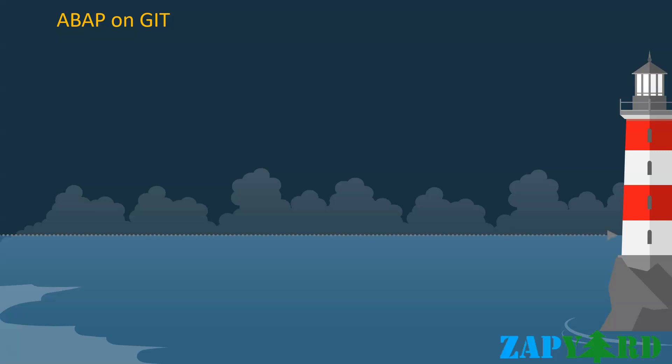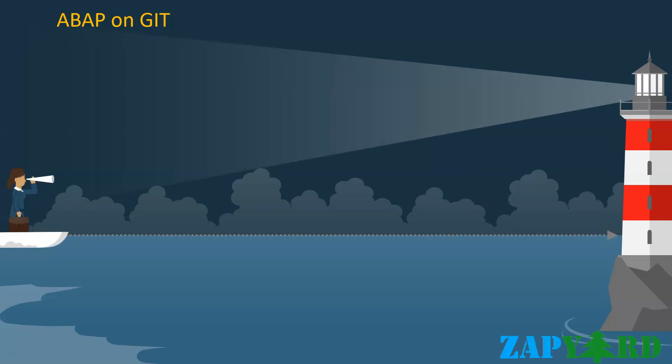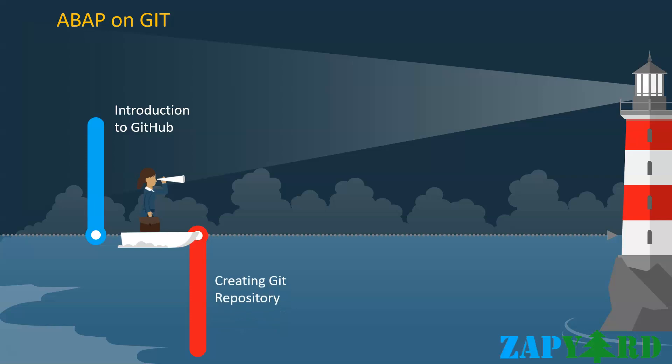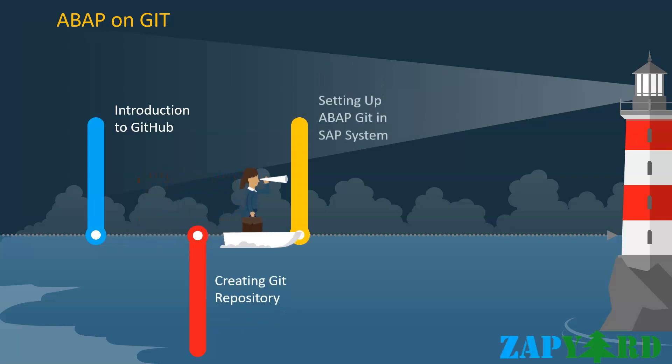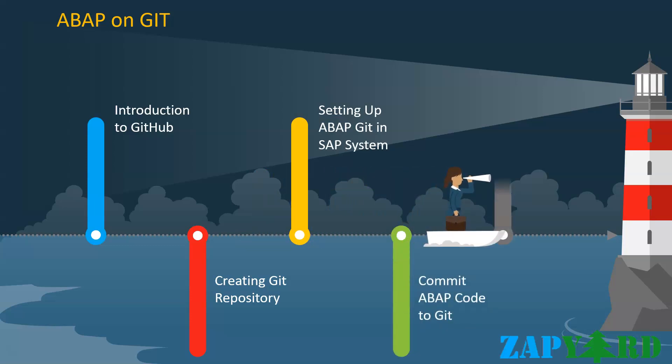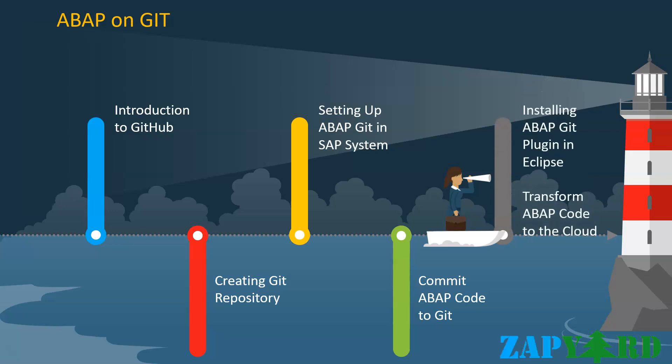Before wrapping up the course, we will learn about ABAP on Git — an open-source project used as an ABAP client for Git, supported from ABAP 7.02 and above. Like any other Git project, ABAP Git allows version control of code committed to a repository. We will introduce you to GitHub, teach you how to create a Git repository, set up ABAP Git in your SAP system, commit ABAP code to Git, install ABAP Git plugins in Eclipse, and transform ABAP code to the cloud. In short, ABAP on Git can be used to export and import SAP development objects between SAP systems.